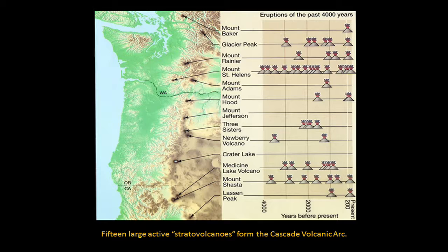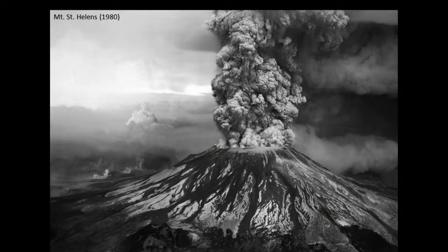Just to emphasize this, if you look at this plot — the lower axis is time going back 4,000 years, and these volcano icons represent eruptions in the past — you can see that many of these have been exceptionally active. For instance, Mount Shasta has had numerous eruptions in the last 4,000 years. The most active is Mount St. Helens, of course — this is the one that people remember erupting so explosively in 1980. These are the kinds of eruptions that have come out of these subduction-like volcanoes.